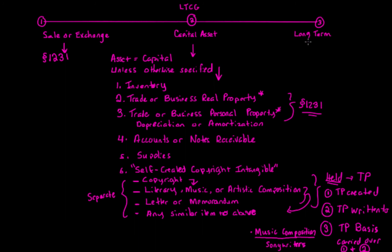The last item is long-term. The asset has to be held for more than one year. If it's held for more than one year, it's considered long-term. The Section 1231 exception I mentioned for sale or exchange and capital asset doesn't apply here — you absolutely have to have held the asset for more than a year to get long-term capital gain treatment, regardless of circumstance. The holding period discussion also raises issues like whether you get to carry over the holding period if you inherited or were gifted the property — please see the next video for that.